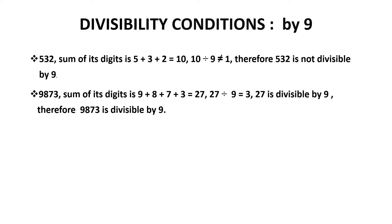The number 9873: sum up the digits of this number. The sum comes out to be 27. 27 is divisible by 9, so 9873 is divisible by 9.